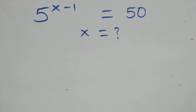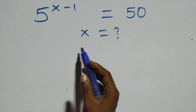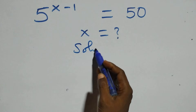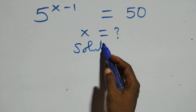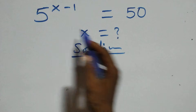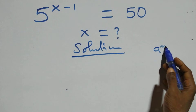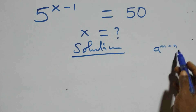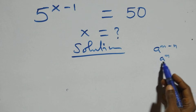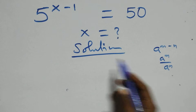Hello, you're welcome. To solve this exponential equation, we recall that a raised to power (n minus n) is the same as a raised to power n over a raised to power n.